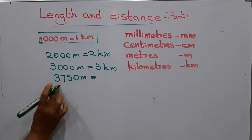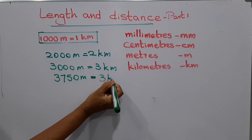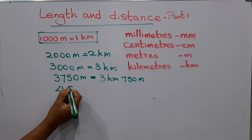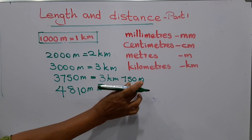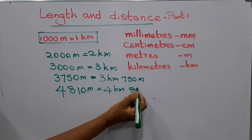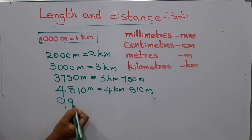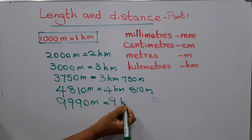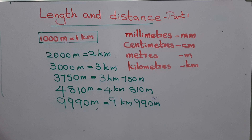...three kilometers and seven hundred and fifty meters. Then four thousand eight hundred and ten meters — how many kilometers? Four kilometers and eight hundred and ten meters. Then nine thousand nine hundred and ninety meters — nine kilometers and nine hundred and ninety meters.